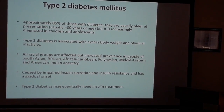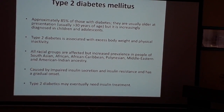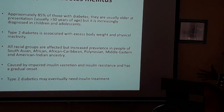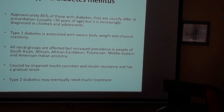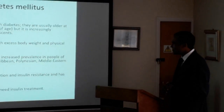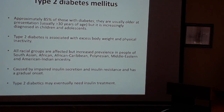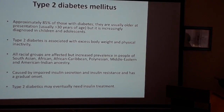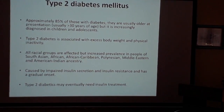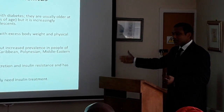Type 2 is typically found in people who are overweight or have low physical activity. There is increased prevalence in certain ethnic groups — Afro-Caribbeans, South Asians, and American Indians. Type 2 diabetics may eventually need insulin if the condition becomes difficult to control even with tablets.